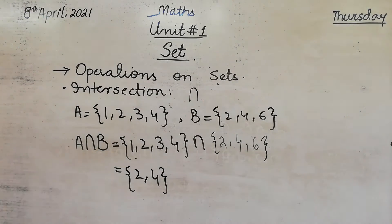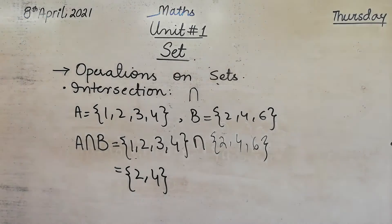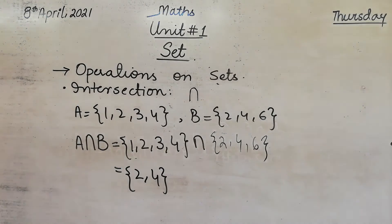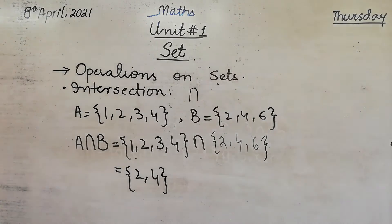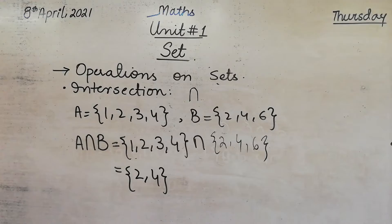Is it clear? In intersection, we have written only the elements that appear in both sets — the same entries. We leave the rest and write only the matching elements.